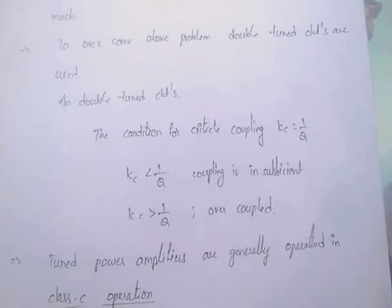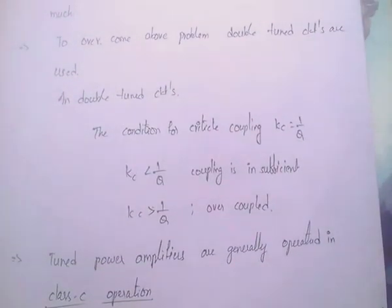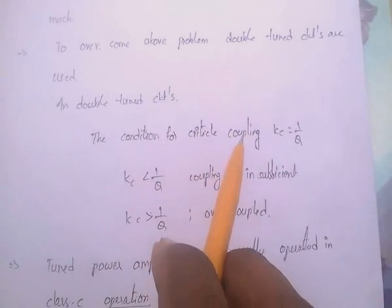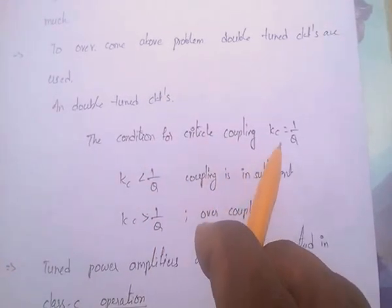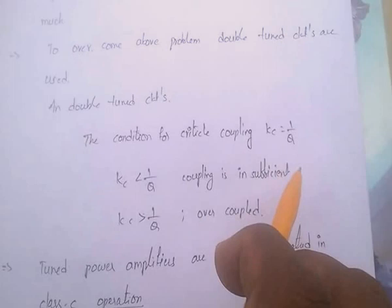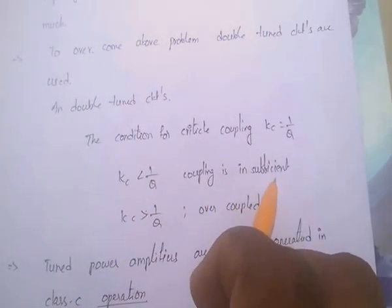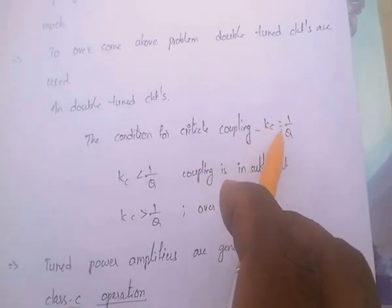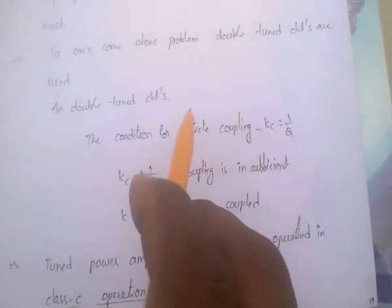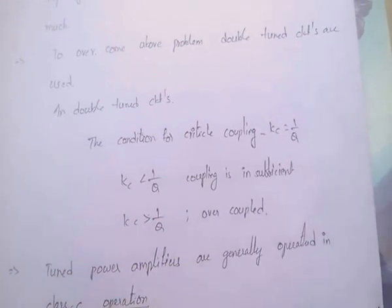In case of the double tuned circuit, the condition for critical coupling is Kc equal to 1 by Q. If Kc is less than 1 by Q, the coupling is insufficient. If Kc equals 1 by Q, the coupling is critical. If Kc is greater than 1 by Q, the coupling is over coupled.